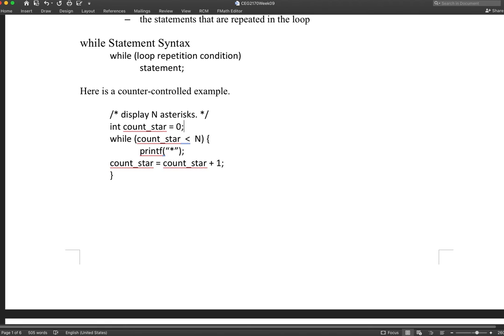The condition says as long as the counter here is less than uppercase N, let's say maybe 10, maybe 100, depends what you want. If you want 100 asterisks in this case, put 100. If the counter is less than, strictly less than N, then it will print. Each time it will print out an asterisk. And also, be very careful, you really need to update your counter each time when the loop body is executed.